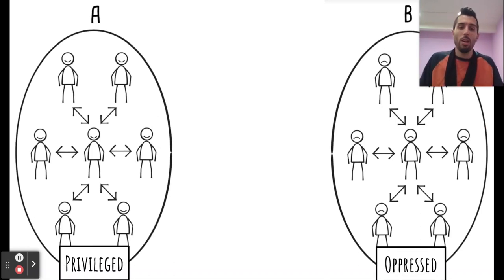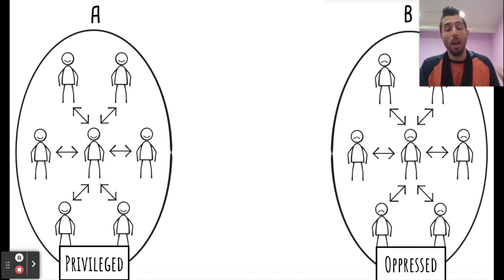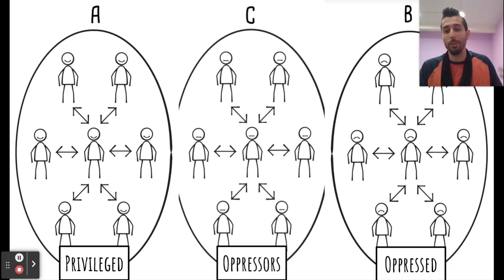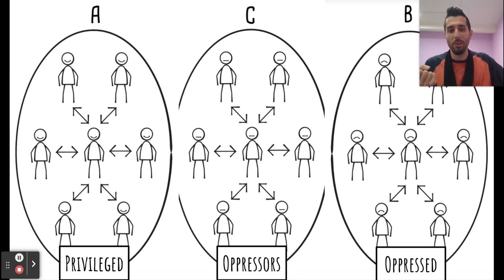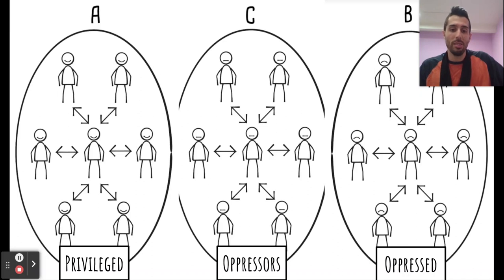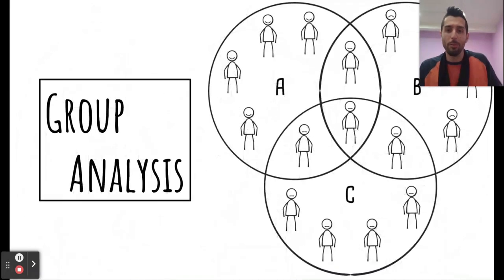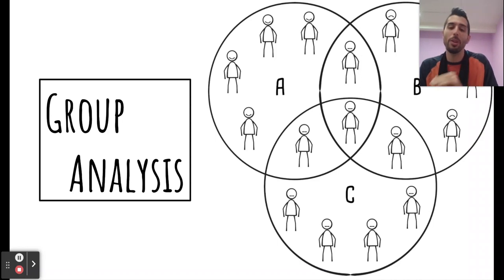Community A is what we might call the privileged group and community B is the oppressed group. In this model, they're isolated communities siloed from each other. All too often it is because there is a third community — community C — that is the enforcer or oppressor group that takes something from community B to the benefit of community A. That can be wealth, resources, natural resources, labor — all manner of things. In reality, of course, we're dealing with a three-circle Venn diagram, with community C enforcing the power and political differential between communities A and B.